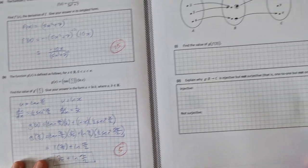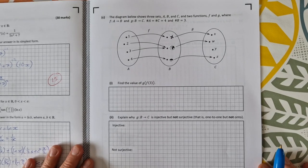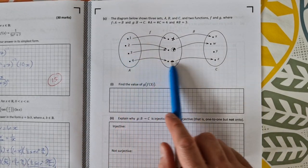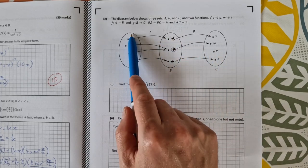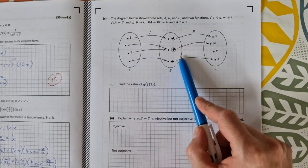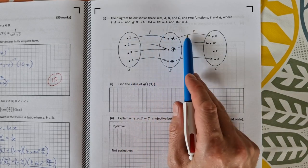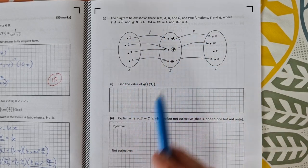On to part C. An easy finish to this question I think. So you're given this diagram of functions where you have numbers going to symbols and then going to letters. So this is the function f. This is the function g in the sets A, B and C.